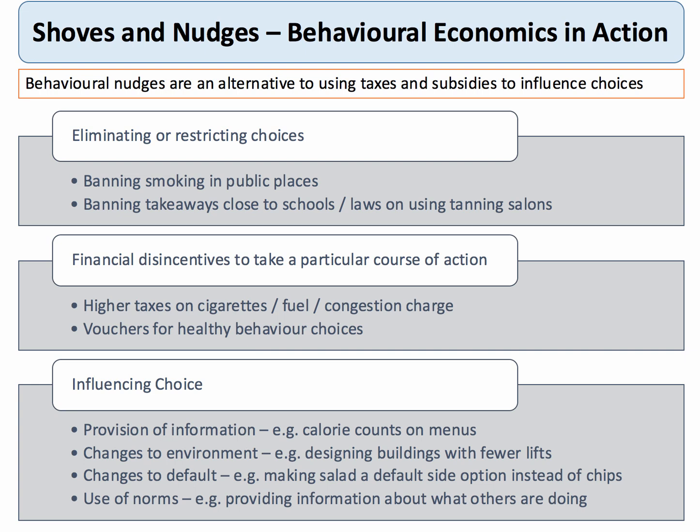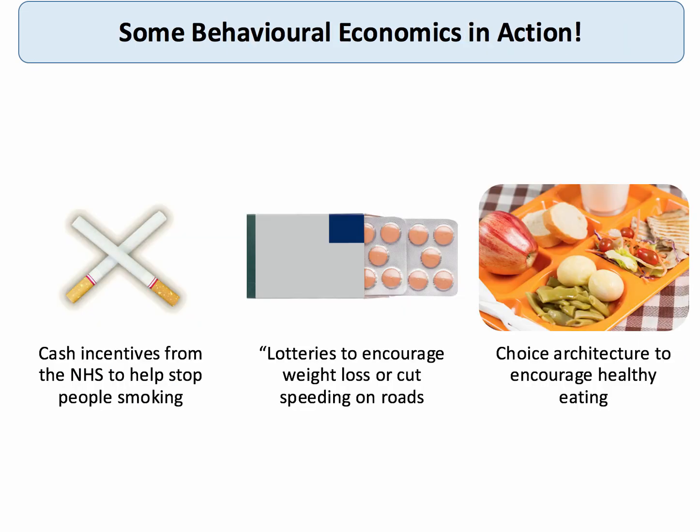Social norms can influence choice without necessarily requiring the hand of government. The seatbelt law is a classic example — for many years people said it would never work, yet nobody would go back to a situation without seatbelts. The social norm changed. Similarly, the norm around drink-driving has changed enormously over the past 25-30 years; phrases like 'one for the road' have disappeared. NHS cash incentives to stop smoking are another example of behavioral economics in action, along with lotteries to encourage weight loss.